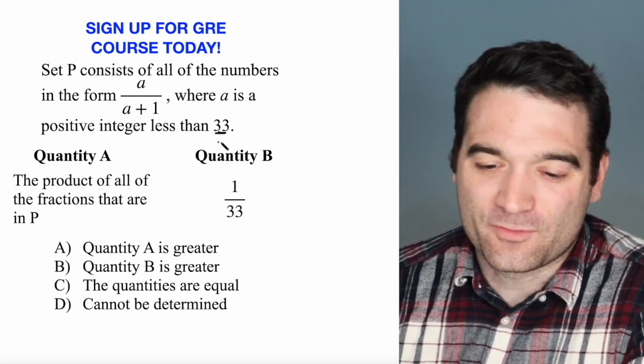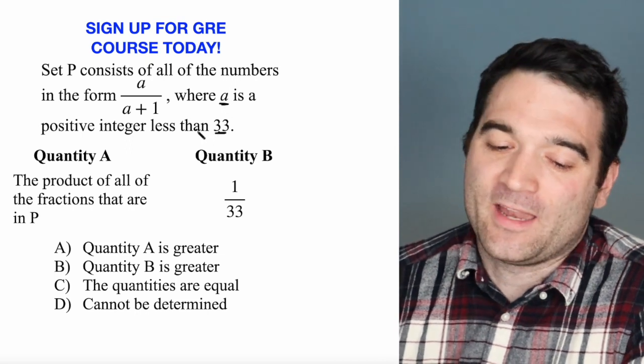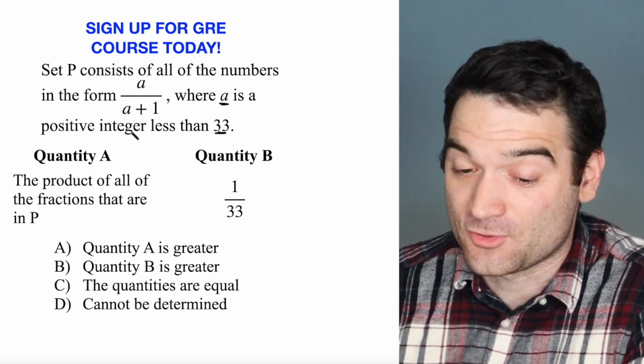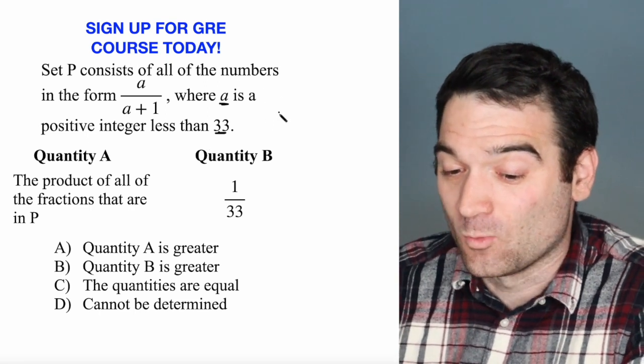All right, let's start from the very beginning. What's the smallest possible value that a could be? A is a positive integer less than 33. When I think about that for a minute, that would be 1. So a equals 1.